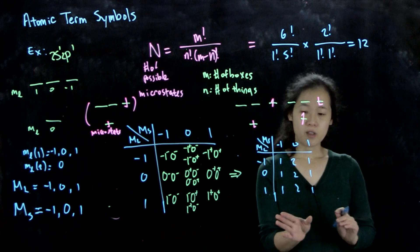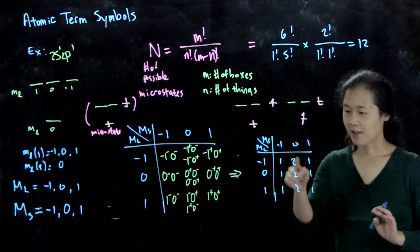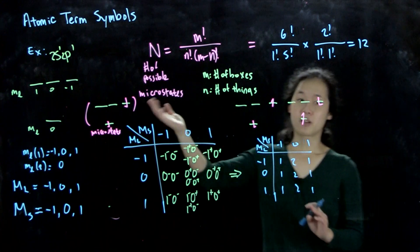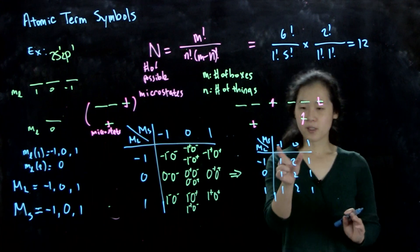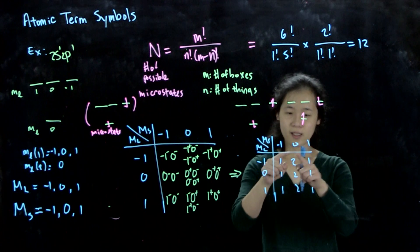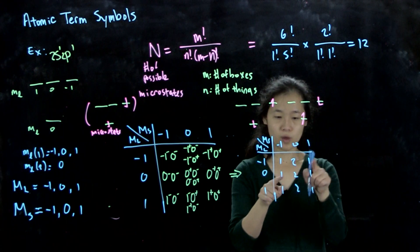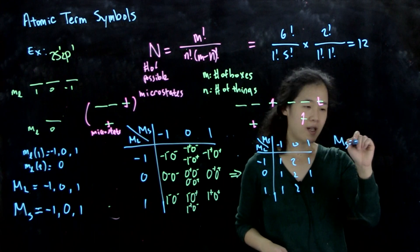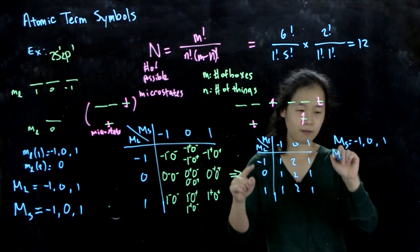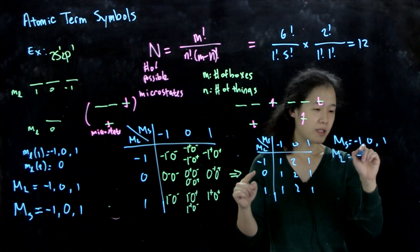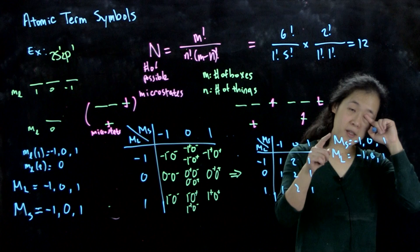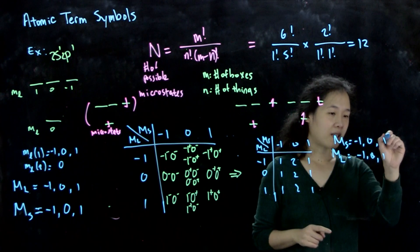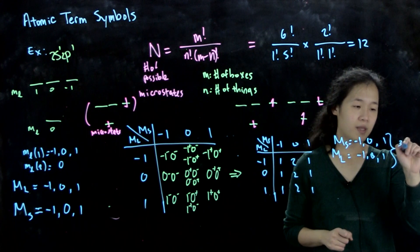This table immediately tells us we need two terms. Looking at the set of 1s: we have M_S = minus 1, 0, 1 and M_L = minus 1, 0, 1. This is a triplet degenerate spin state and a triplet degenerate orbital angular momentum state, giving a triplet P term. Big S = 1, so 2S+1 = 3, and P means L = 1.